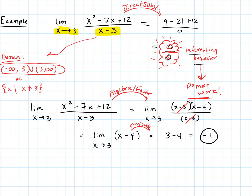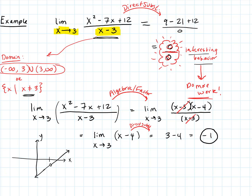Keep in mind what that means on a graphical, more global scale. This point x equals 3 in the original function is a hole in the graph — we know from the domain that x cannot actually equal 3. But the function on either side has a limit that equals negative 1, so the function is approaching negative 1, but right at 3 there's a hole in the graph.